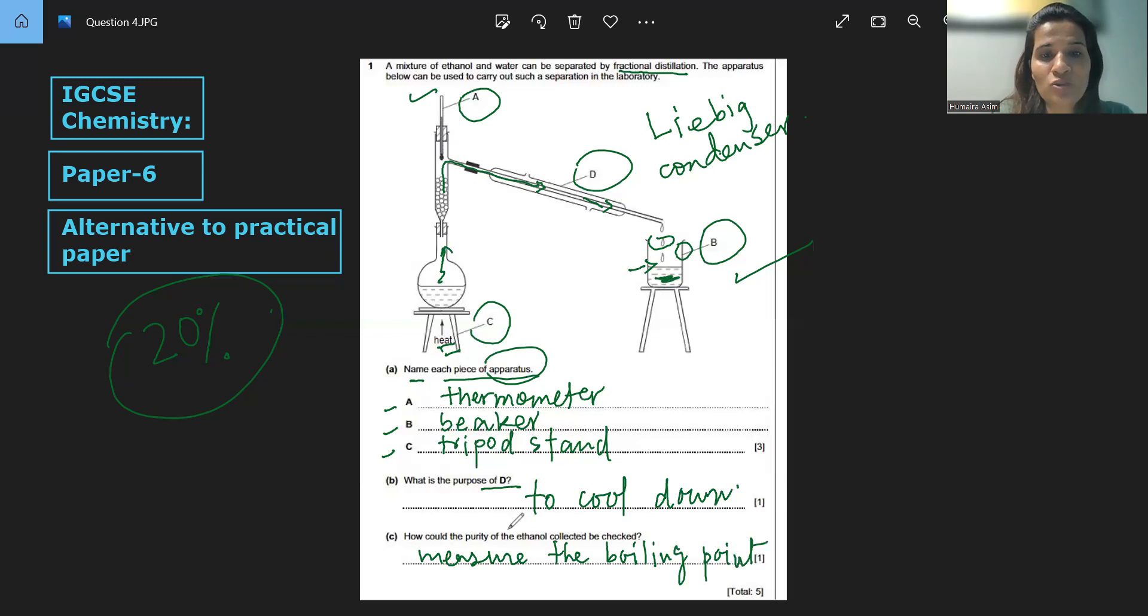Just for knowledge, what is the boiling point of ethanol? That is basically 78 degrees Celsius. So yes guys, keep practicing alternative to practical questions, and not only paper six but paper four and paper two as well, because this is how you will get your final grade.